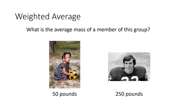But if our group consisted of more little kids than football players, we'd expect that average mass to drop. If our sample consisted of more football players than little kids, we would expect it to be bigger than 150. So let's take a look at a specific example of how we would calculate the average weight in a situation like that.